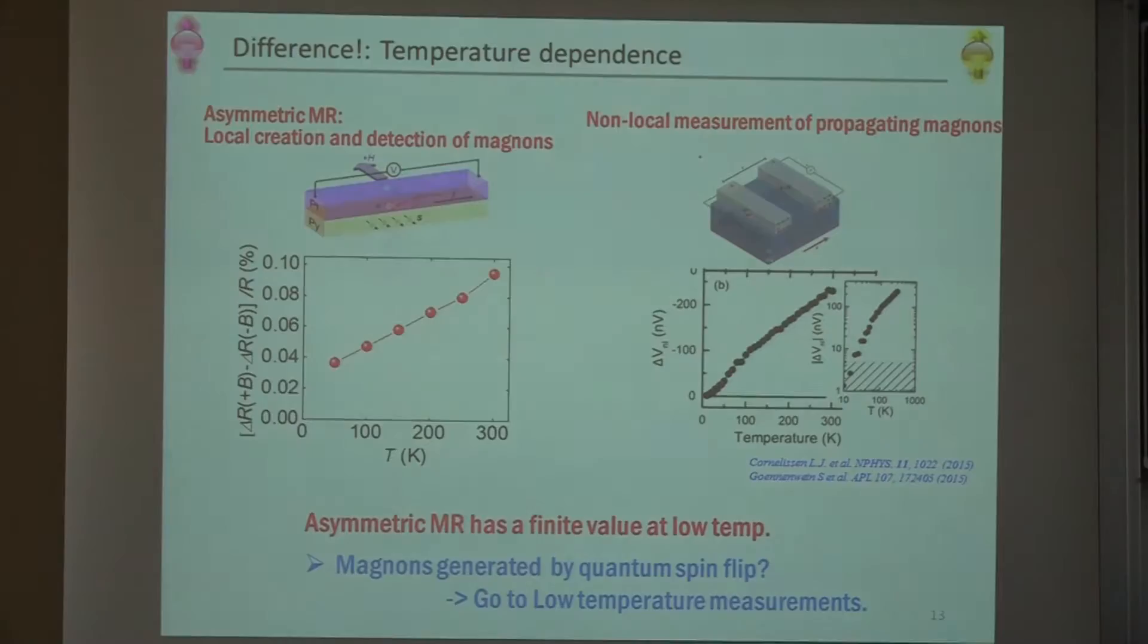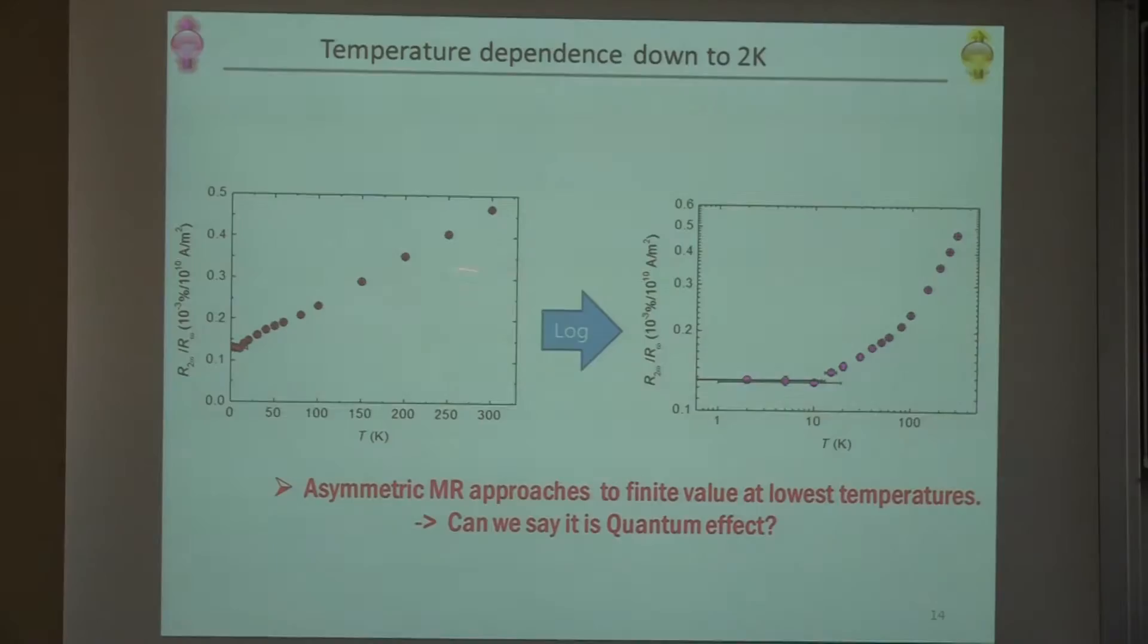This is my final slide. We measured the temperature dependence of MR down to 2K. We have the finite value even at 2K. And if you magnify this graph in a longer distance scale, you see some saturation of MR at low temperatures. So my summary is just a question: Can we say this is crossover from thermal to quantum?